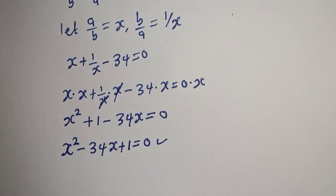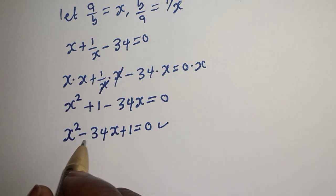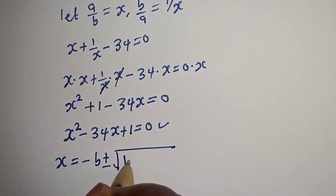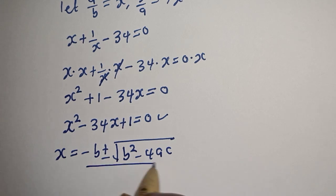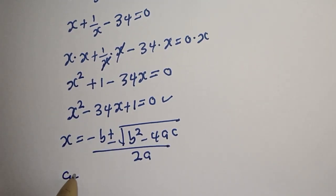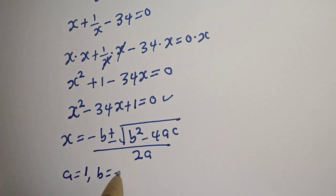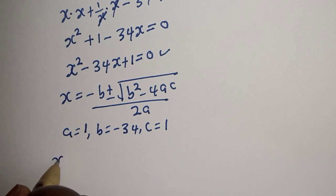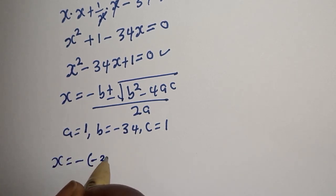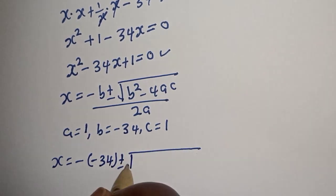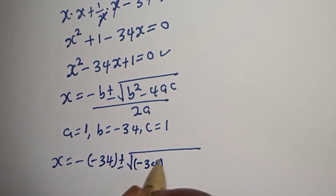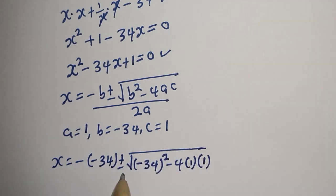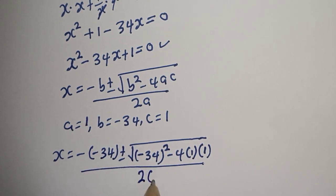This is a quadratic equation which can be solved using the quadratic formula. In this case, S equals negative B plus or minus square root of B squared minus 4AC, over 2A. Here A equals 1, B equals negative 34, and C equals 1.